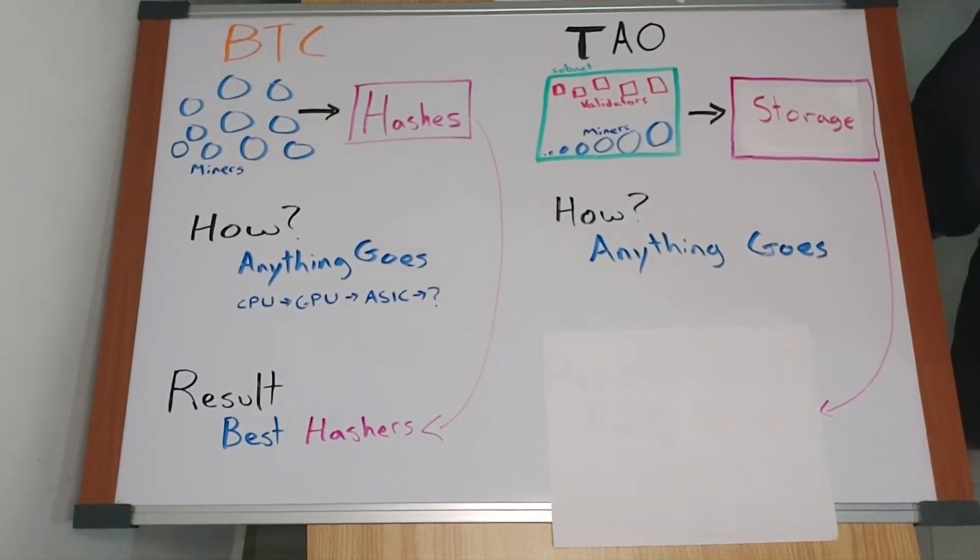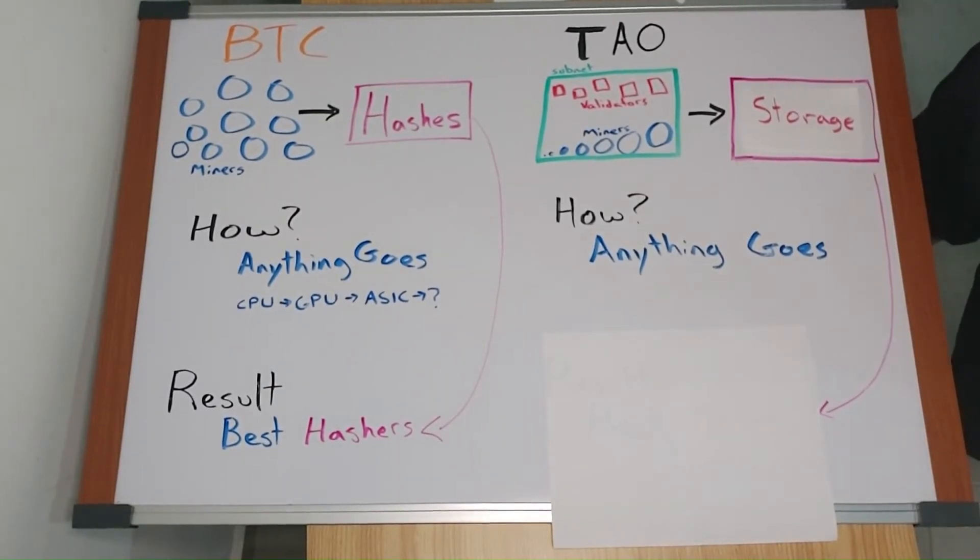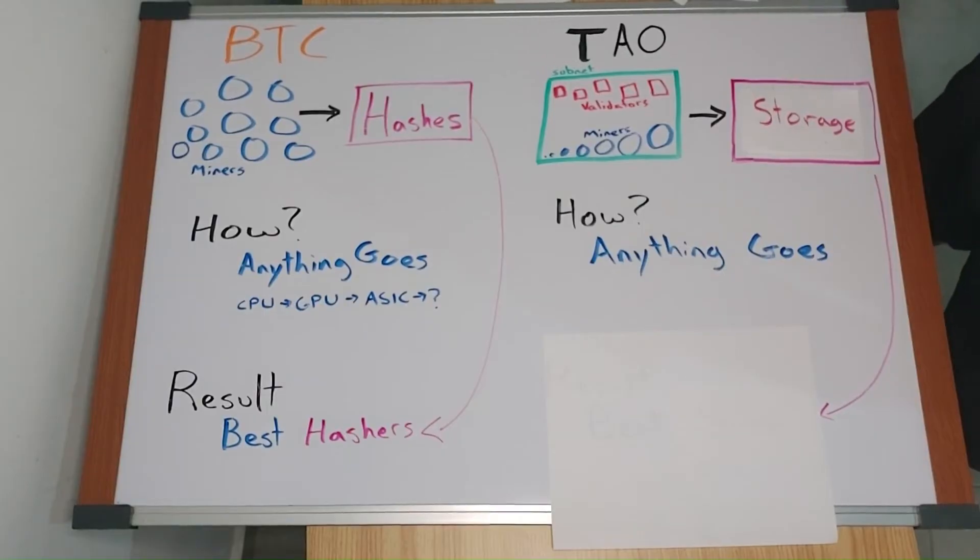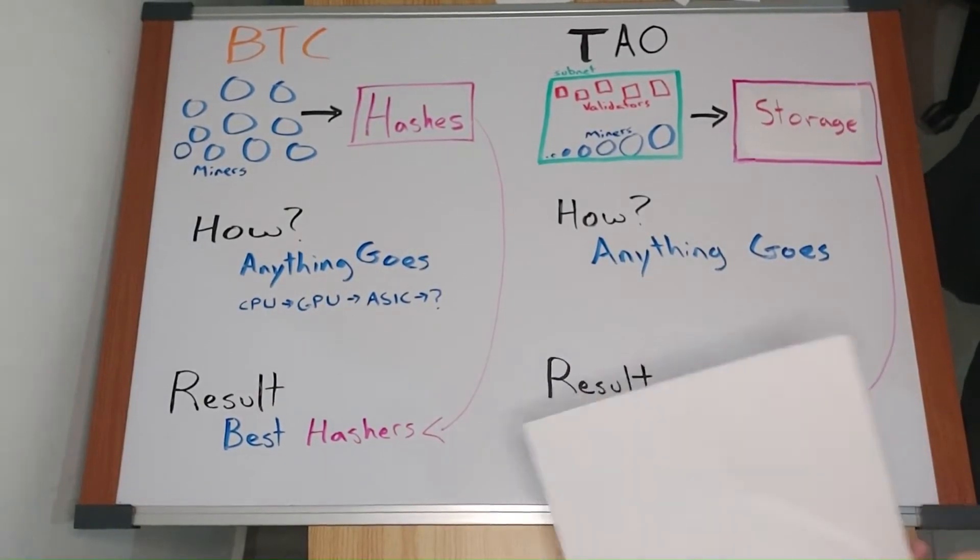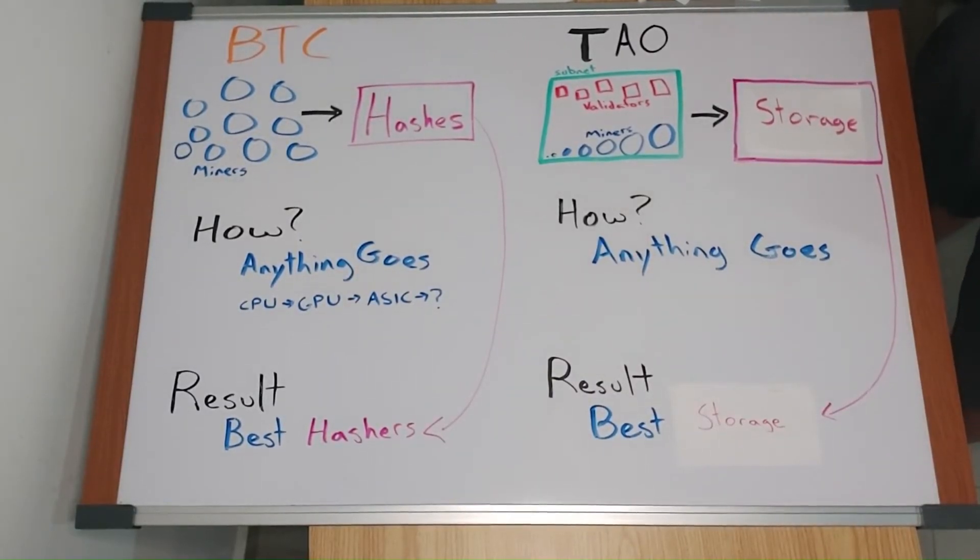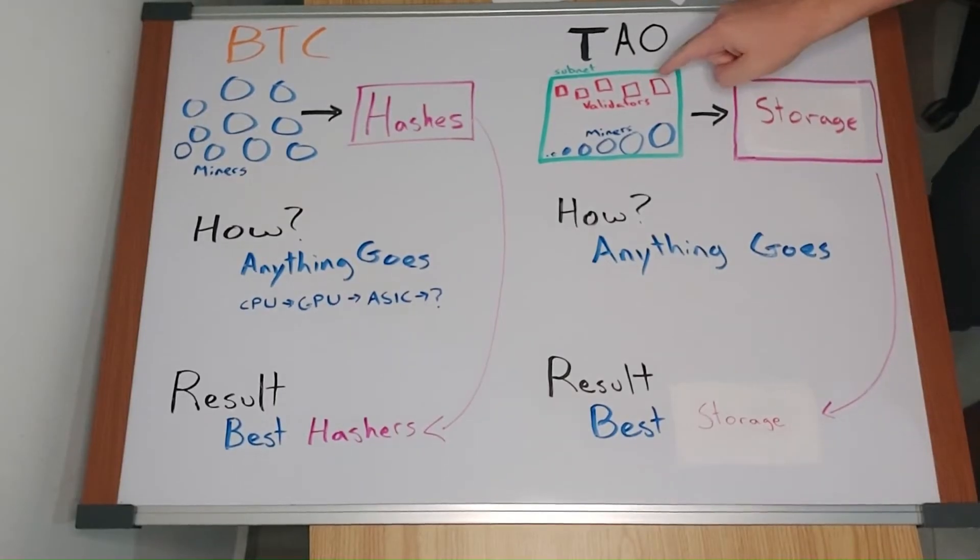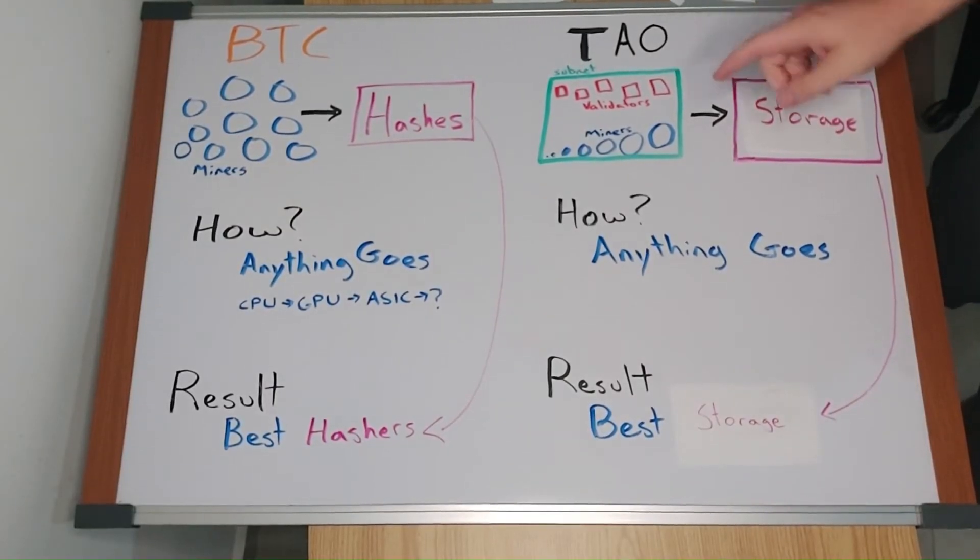The storage subnet will produce storage better than any centralized entity can. The result? The best storage. Cheapest, most reliable. Whatever the validator code asks for will be provided.